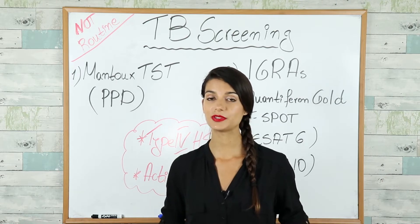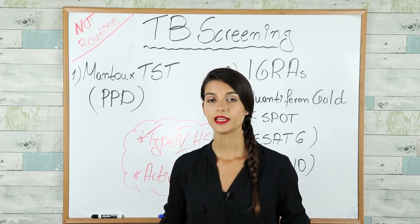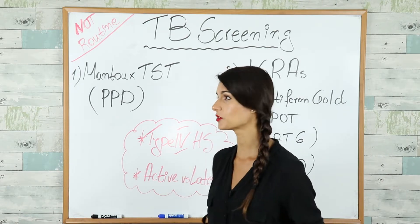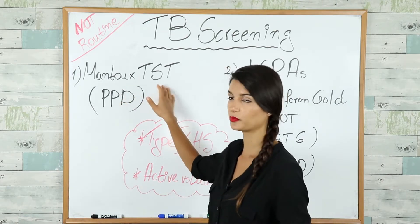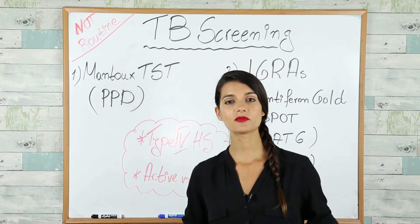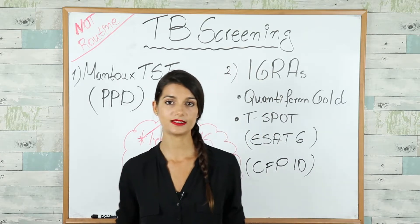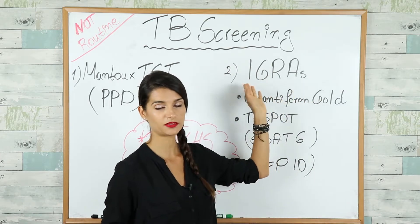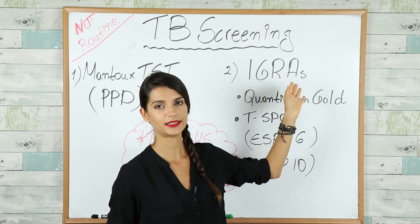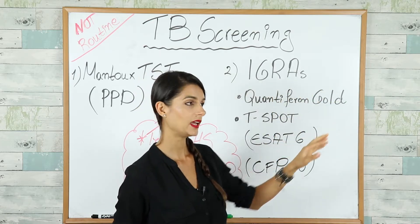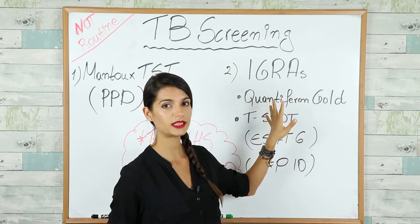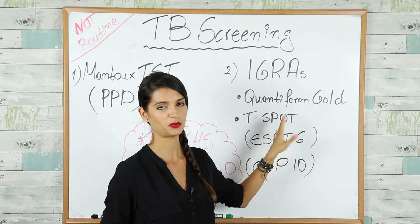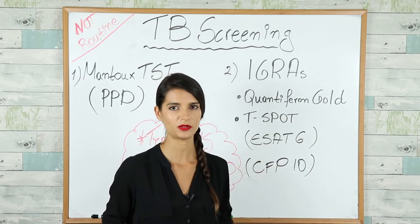We have two types of TB screening tests. The first is a skin test called the Mantoux tuberculin skin test. The second is a blood test called the IGRA test — the interferon gamma releasing assays — and here we have two FDA-approved tests: the QuantiFERON-Gold and the T-SPOT.